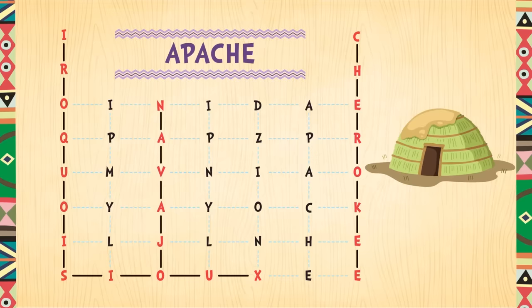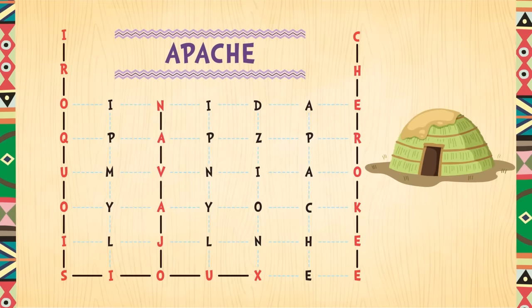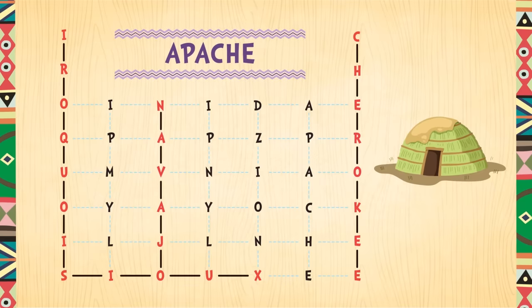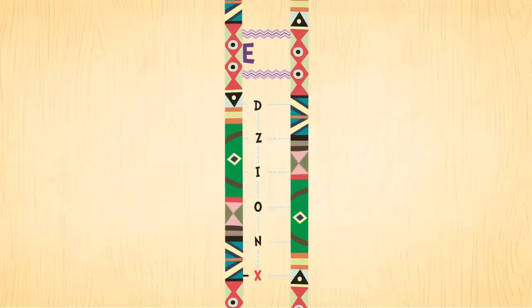The last name we need to find is Apache. The Apache Indians built shelters called wigwams from branches, leaves, and grass. Let's find the name Apache — A P A C H E. Excellent!